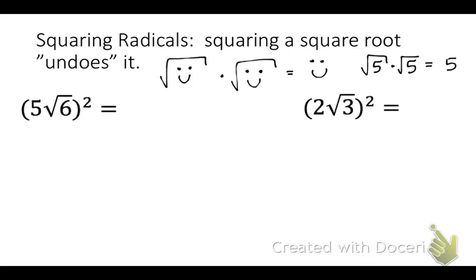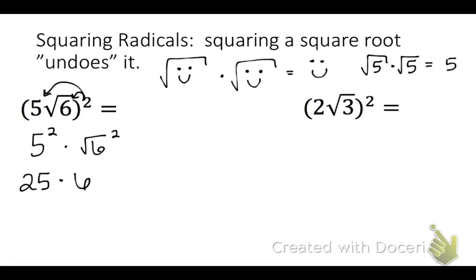In the first example, we have 5 square root 6, all squared. Anytime we square something like this, we square everything inside: so we get 5 squared times square root 6 squared. 5 squared is 25, and square root 6 squared is just 6 because the square and the square root undo each other. Last, 25 times 6 equals 150.